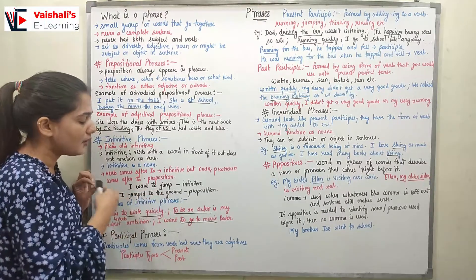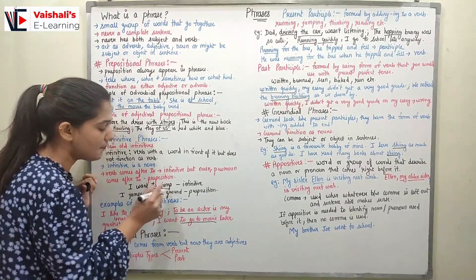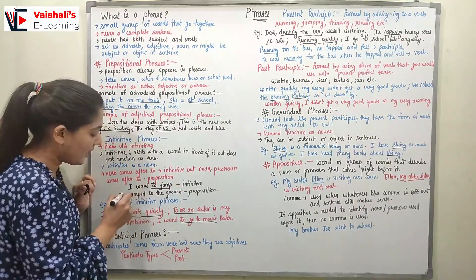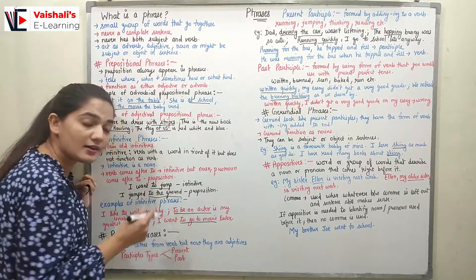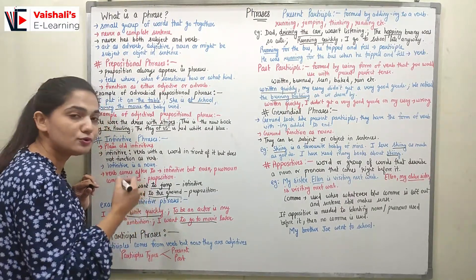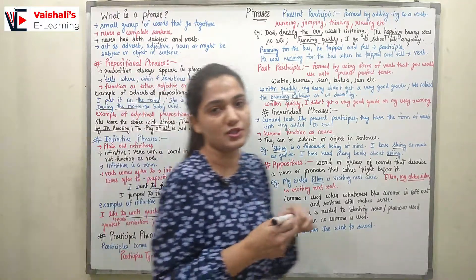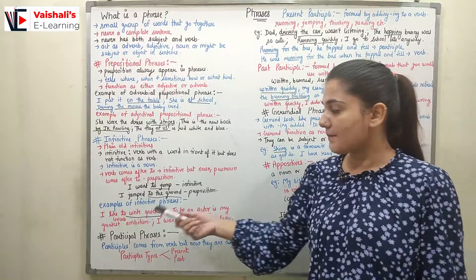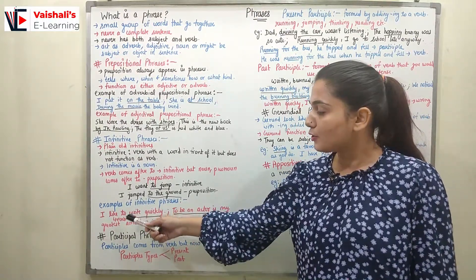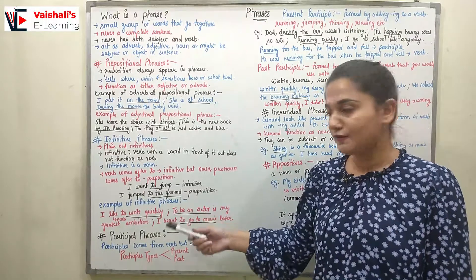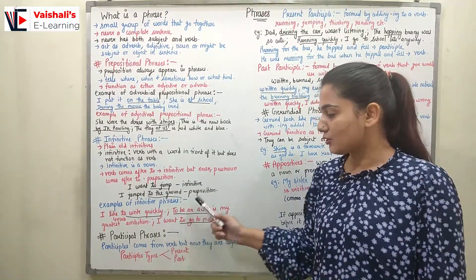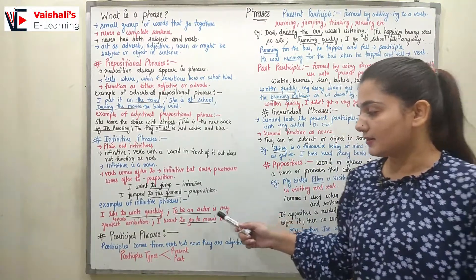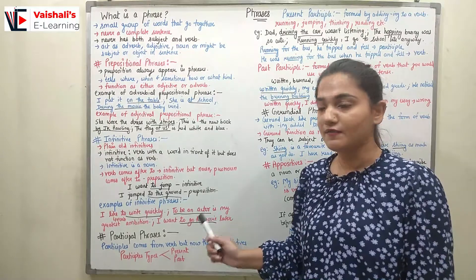'I want to jump' — 'to jump' is an infinitive because 'jump' is a verb used after 'to'. 'I jump to the ground' — here 'to' is a preposition because a noun follows it. Examples of infinitive phrases: 'I like to write quickly' — 'to write quickly' is the infinitive phrase. 'To be an actor is my greatest ambition' — 'to be an actor' is the infinitive phrase. 'I want to go to the movie later' — 'to go to the movie' is the infinitive phrase.